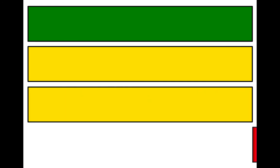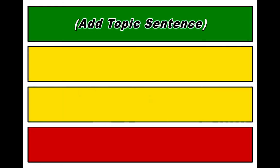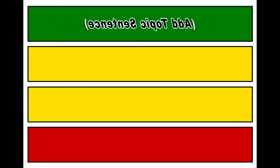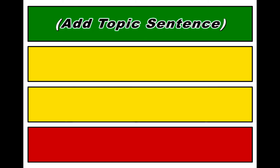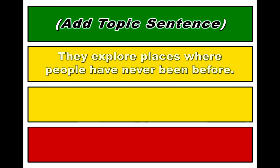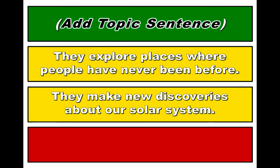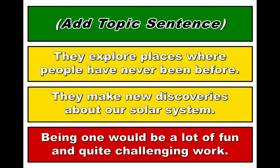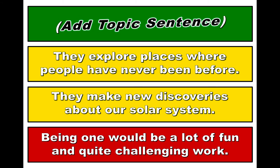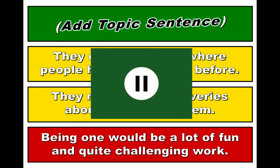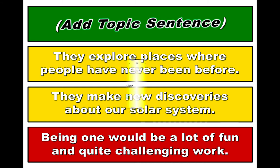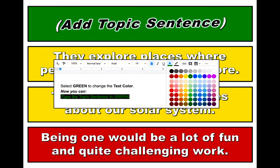In this assignment, you will be adding the topic sentence to this paragraph using your Google Doc. The supporting sentences are: They explore places where people have never been before. They make new discoveries about our solar system. Being one would be a lot of fun and quite challenging work. Write a topic sentence that makes sense based on the supporting and ending sentences given. Don't forget to change the text color to green to type your topic sentence.